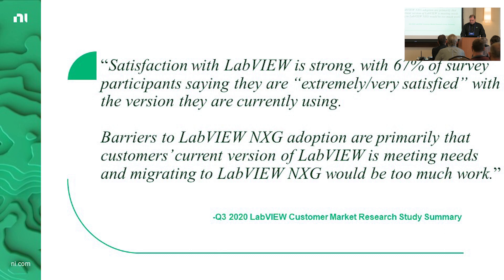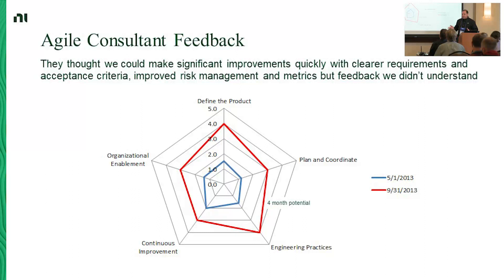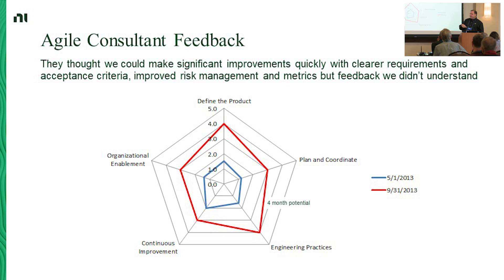We also brought in Agile consultants and said, this project has taken us a lot longer than we thought — we need some help. The Agile consultant said we could make significant improvements by doing some quick changes and improving our risk management and process. But we actually didn't understand this feedback. The scores they gave us were pretty low on basically every aspect of the analysis. Their feedback was, 'you've got to simplify your code.' And we looked at it and said, 'but it's a complex problem — of course the solution's got to be complex.' That was actually our response. We just didn't understand what we were being told. Once we did start understanding it, we started making a lot of changes. It's not that we didn't ask for feedback in this case — we just didn't understand what we were being told.